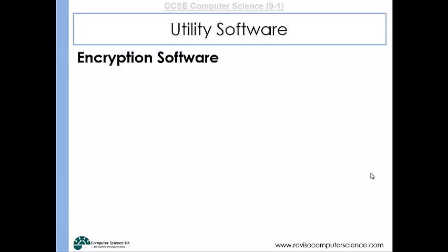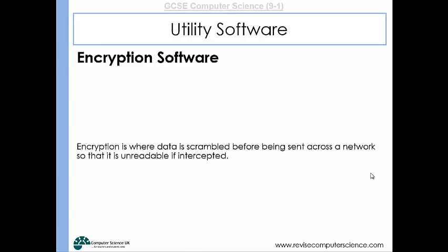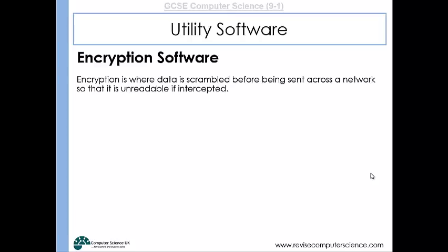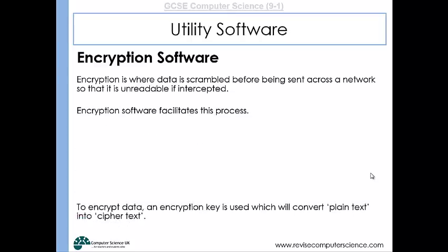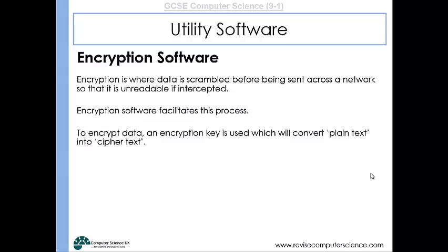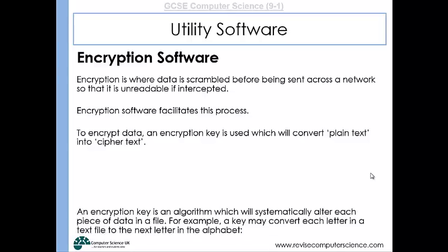Encryption software is where data is scrambled before being sent across a network so that if it's intercepted it can't be read. Encryption software uses an encryption key which converts your data into a scrambled form, turning plain text into cipher text.